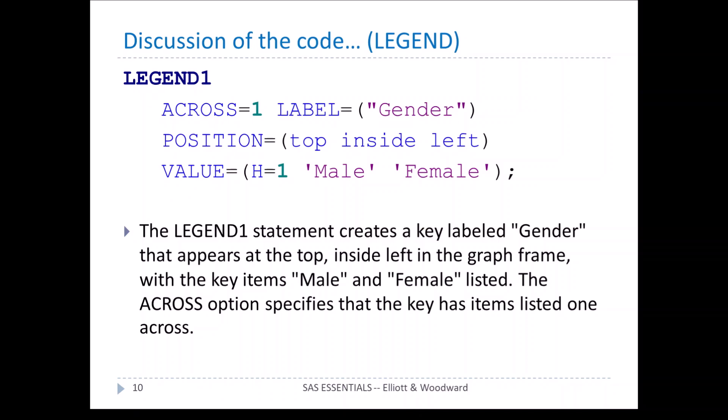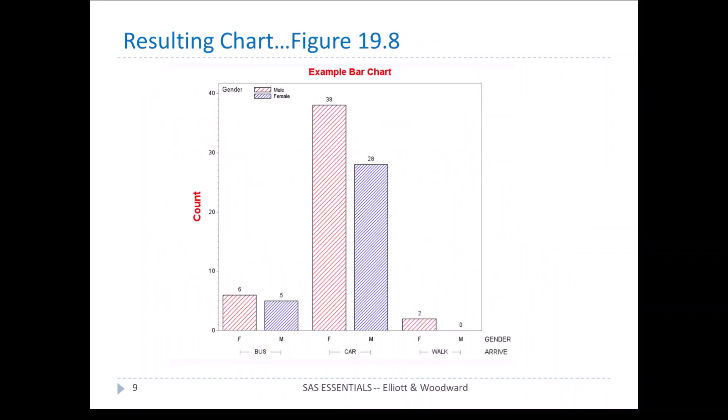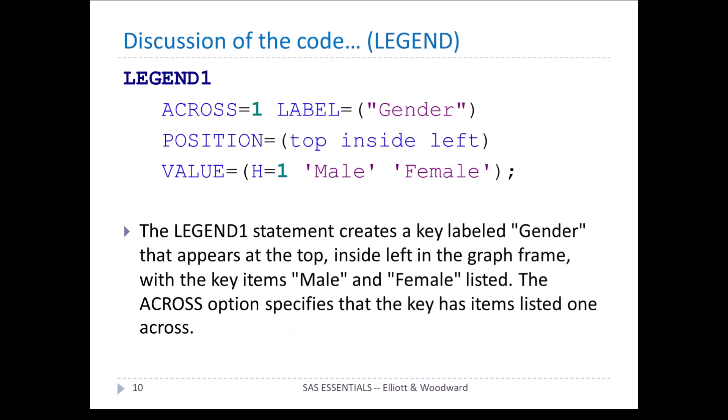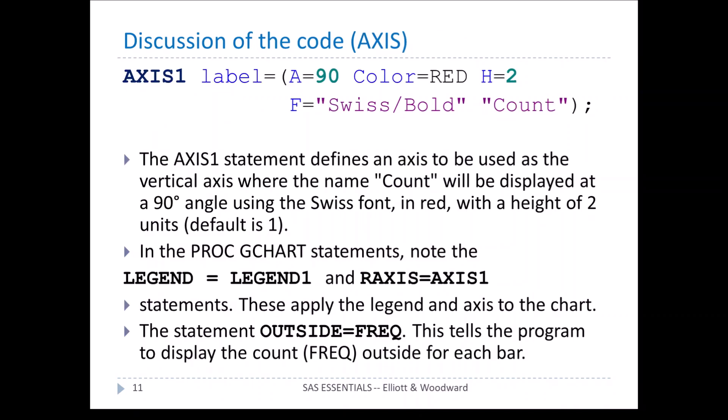Let's look more closely at this code. We first define legend1. The across equal 1 makes the key with items in just one column — that's where we define male and female stacked. The label is gender, position top inside left. The values male and female use a height of 1, the normal default. Then axis1 is defined with angle equal 90 degrees, red with a height of 2, font Swiss bold, and the label value is count. We then apply them: legend equal legend1, R axis equal axis1, and outside equal freak.